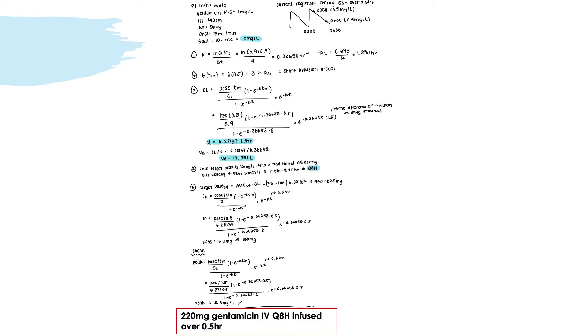We find the revised clearance and volume of distribution using the actual current regimen — 120 mg dose given every 8 hours. The T here is 1.5 hours, because the dose was given at midnight and the peak was recorded at 0200. Since the infusion time was 0.5 hours, the infusion ended at 12:30 AM, so the time from end of infusion to the recorded peak at 2:00 AM is 1.5 hours. We calculate clearance and then volume of distribution. For the dosing interval, since the target peak is 10 mg/L, this is traditional aminoglycoside dosing, and the interval is typically 4 to 5 half-lives, which is between 7.56 and 9.45 hours, so we choose Q8H.